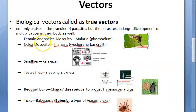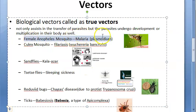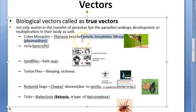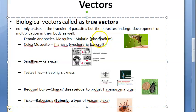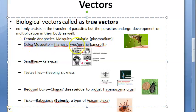Examples of biological vectors: the female anopheles mosquito transmits malaria, caused by Plasmodium. The Culex mosquito transmits filariasis, caused by Wuchereria bancrofti, which is actually a roundworm — a nematode.